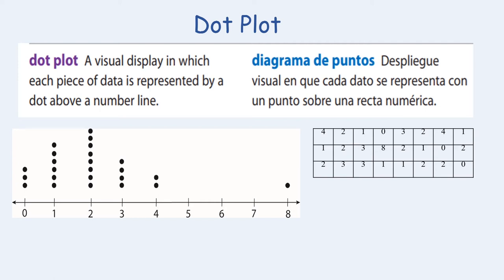For example, if you look in the table you will find that there are three zeros and above the zero you will see three dots. The same goes for every number displayed.